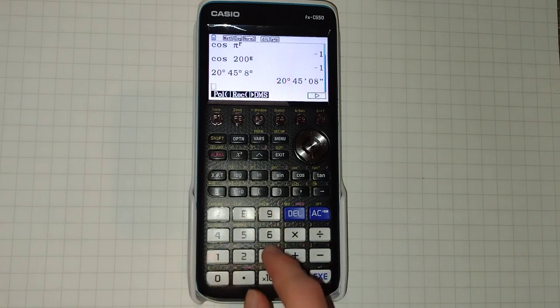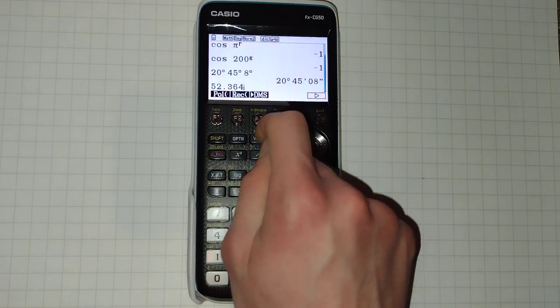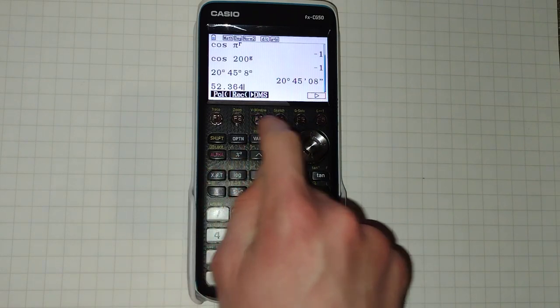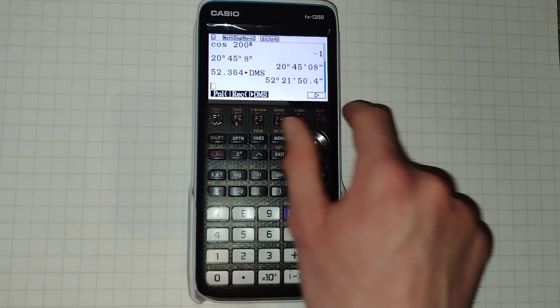Now what if we've got a decimal number such as 52.364 that we want to put into degrees, minutes and seconds. Well we can. From here we click F6 and then F3, and execute. And there we go.